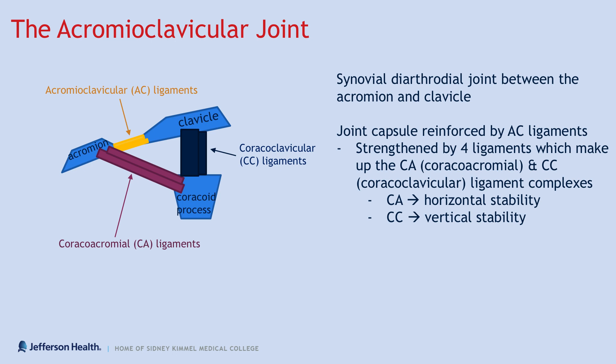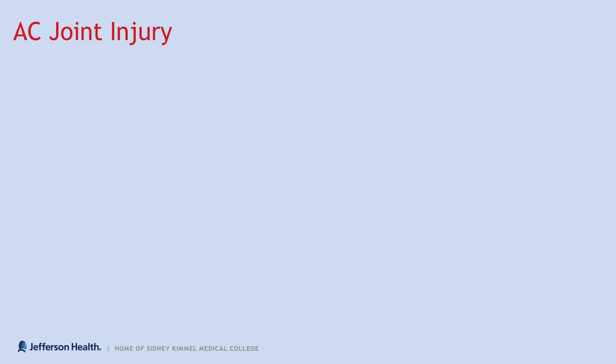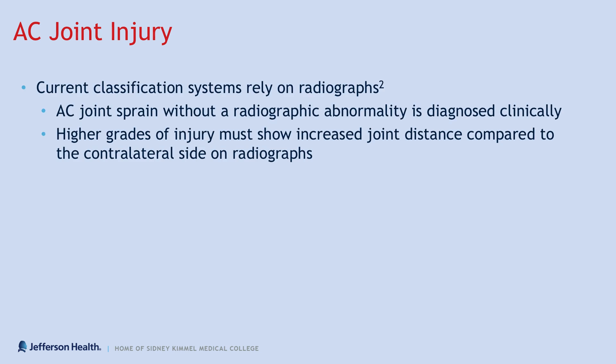Normal joint width is historically defined as between one to three millimeters. With AC joint injury, current classification systems rely on radiographs. An AC joint sprain without a radiographic abnormality is diagnosed clinically, and higher grades of injury must show increased joint distance compared to the contralateral side on radiographs.